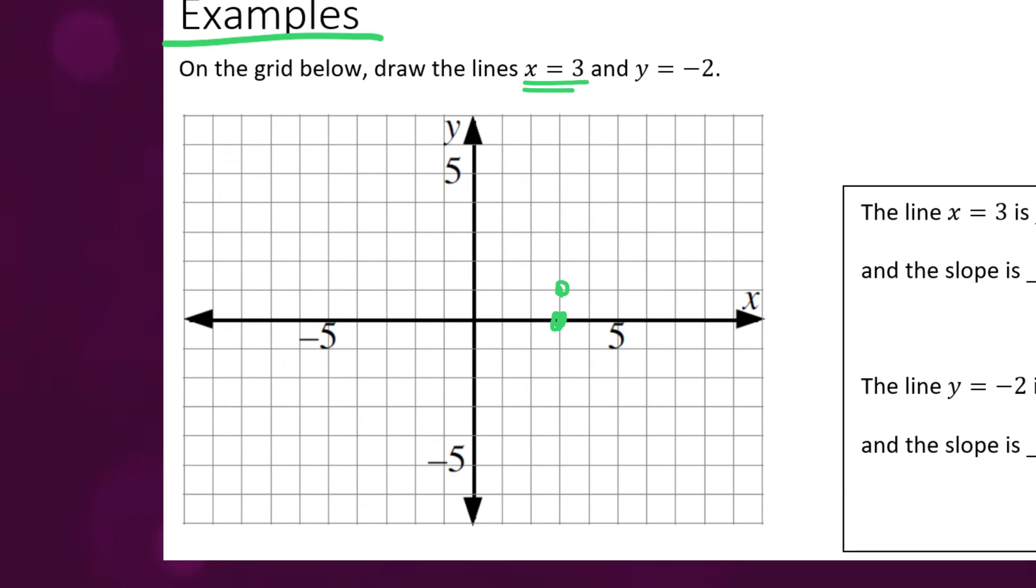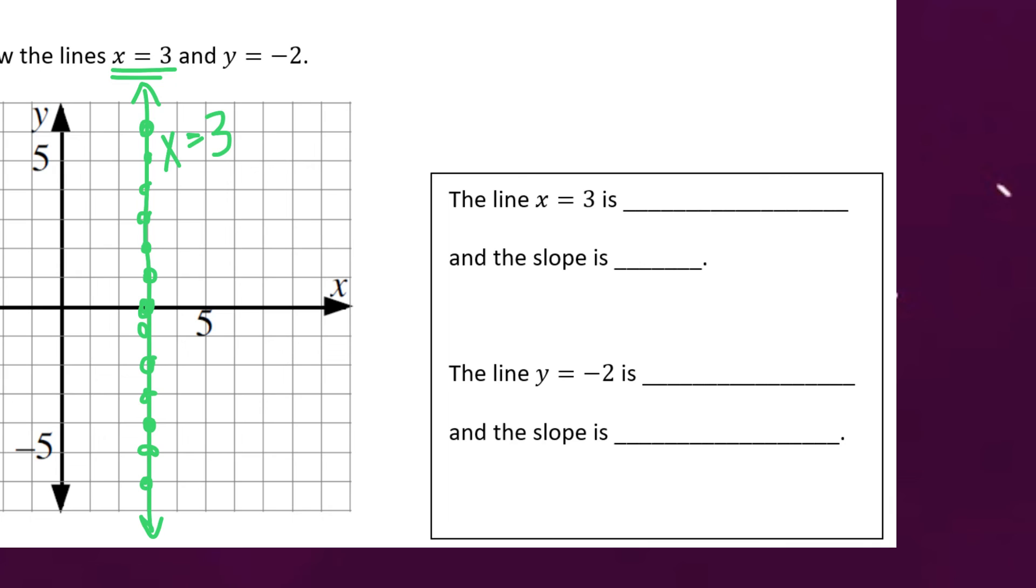And what we need to do next is draw more points that have an x value of three. What do I mean by that? Well check this out. So all of these points along this line have an x value of three. The only thing that's changing is the y value and that's okay. All we're doing is trying to find all the points that have an x value of three. So we're going to connect these guys, add some arrows at the end, and that's our line x equals three. So let's go ahead and label it. So we can see that this forms a vertical line.